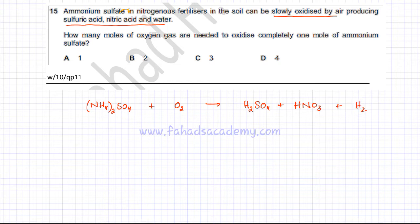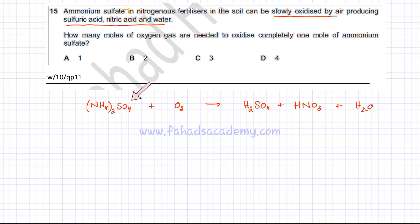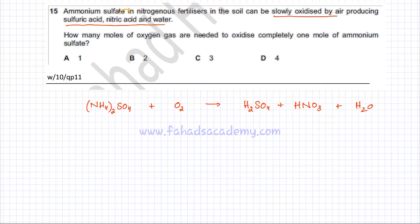Now we balance the equation, starting with the simplest elements. Sulfur is already balanced. There are two nitrogens on the left-hand side, so there should be two nitrogens on the right as well, meaning two molecules of nitric acid (2HNO₃).